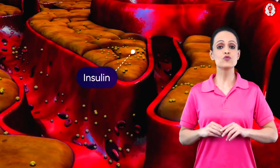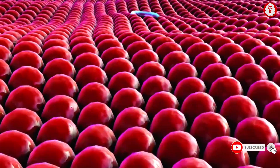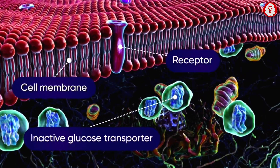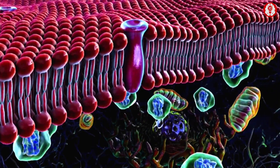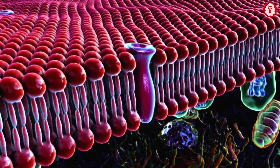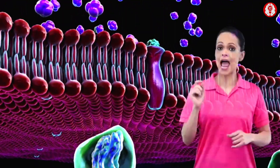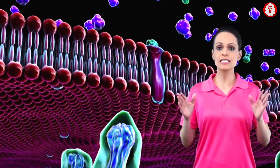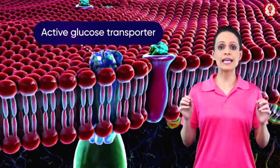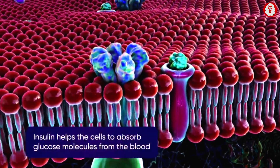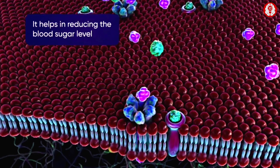This insulin is released from the vein and reaches the hepatic cells. A closer look at one such cell shows the cell membrane with receptors and inactive glucose transporters enclosed in a vesicle in the cytoplasm. Binding of insulin to the receptor on this cell's membrane leads to rapid fusion of those vesicles with the plasma membrane and insertion of the glucose transporters in the membrane. From these transporters, the glucose molecules gain entry within the cell. Insulin thus helps the cell absorb glucose molecules from the blood and helps in reducing the blood sugar level.